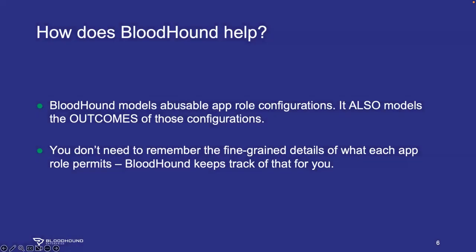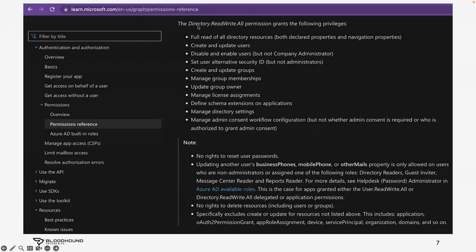So how does Bloodhound help with that situation? Bloodhound models not only the configurations, it will also model the outcomes of those configurations. This is the crux of how Bloodhound helps admins, red teamers, or anybody. You don't need to remember the fine-grained details of what each of those app roles permits because Bloodhound will keep track of that for you. Let's look at an example.